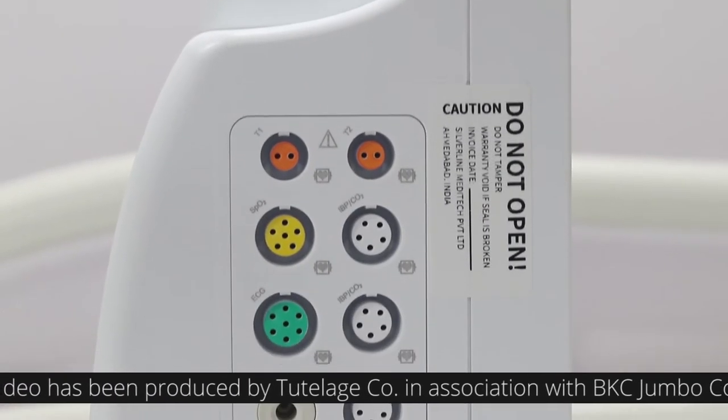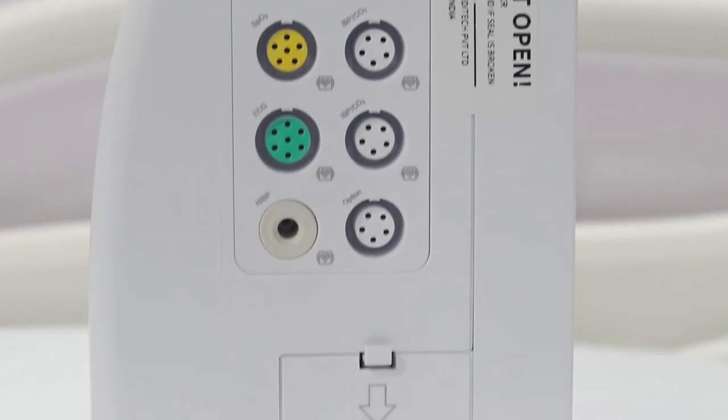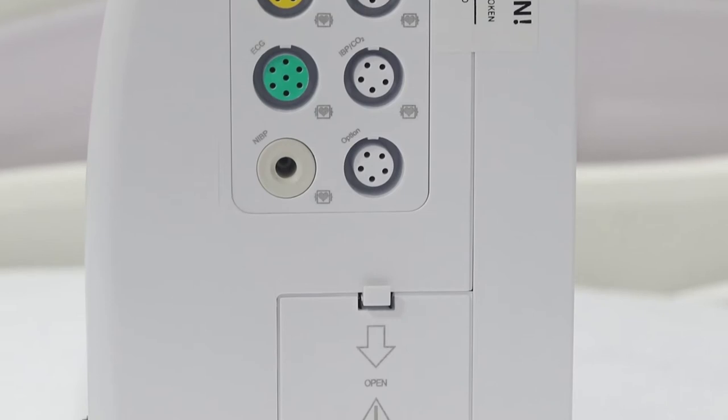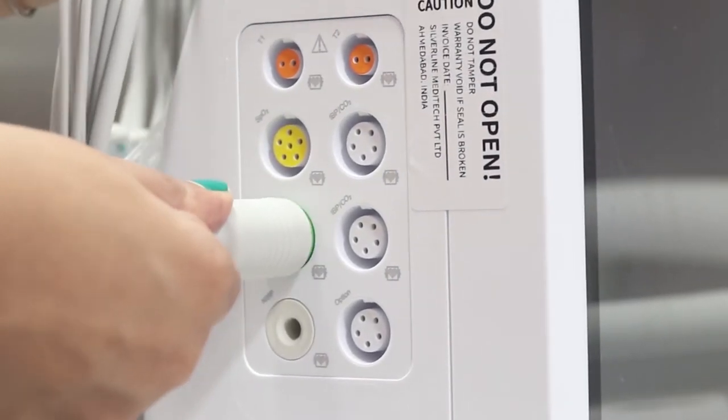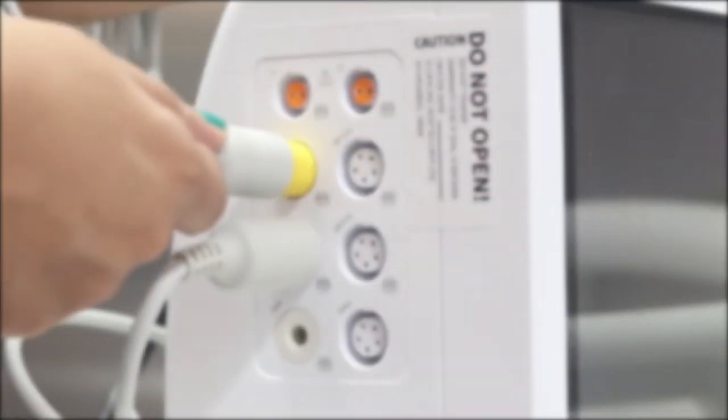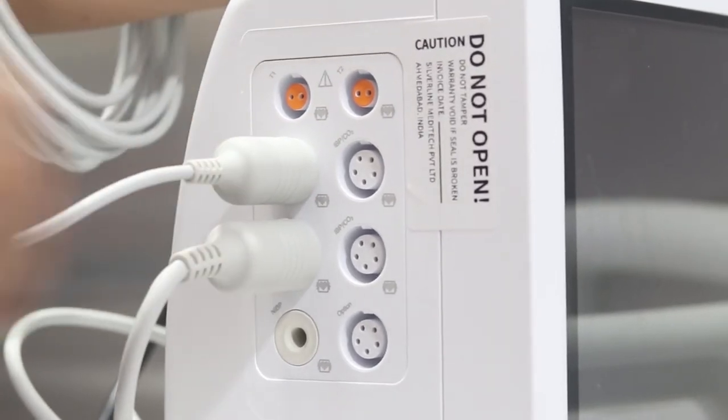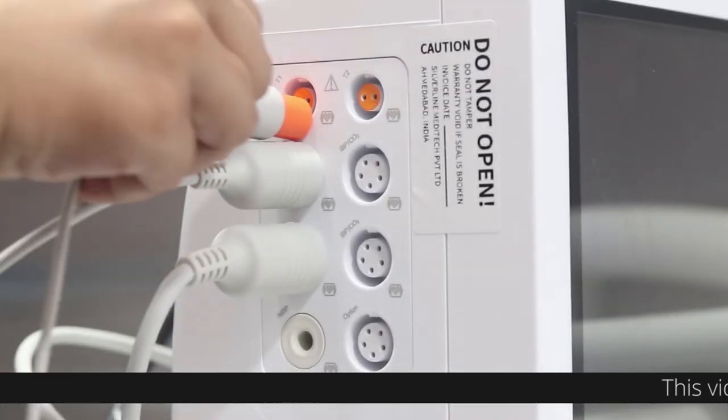The left panel has sockets which are color-coded with each probe. Plug into the green color socket for ECG probe, yellow socket for Oxygen Saturation Probe, and orange socket for Temperature Probes.